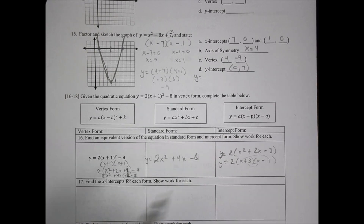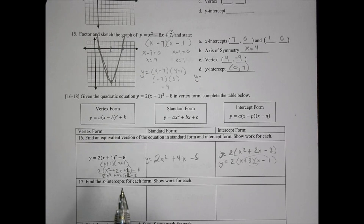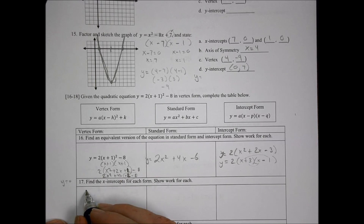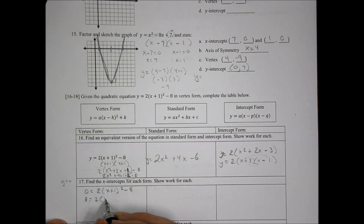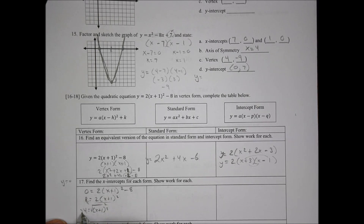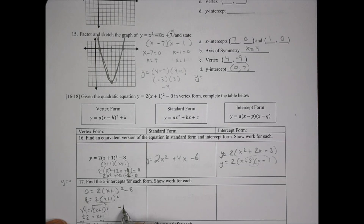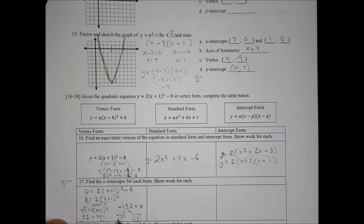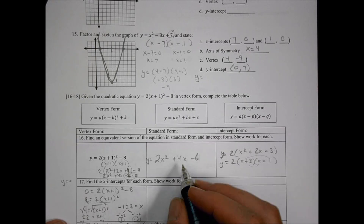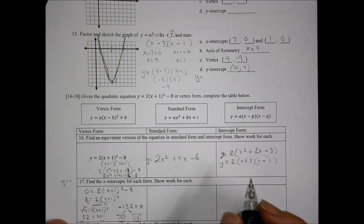To find x-intercepts from the vertex form, set y equal to zero: 0 = 2(x + 1)² − 8. Move the 8 over: 8 = 2(x + 1)². Divide both sides by two: 4 = (x + 1)². Take the square root: ±2 = x + 1. Subtract one: x = −1 ± 2. So x equals negative one plus two gives positive one, and negative one minus two gives negative three. The x-intercepts are (1, 0) and (−3, 0).